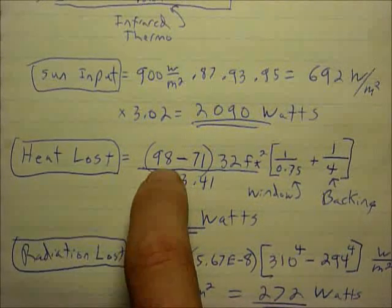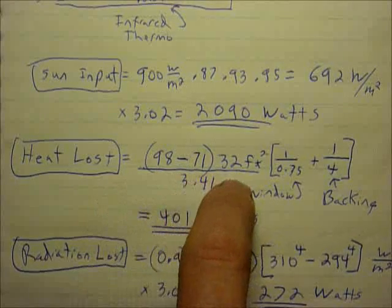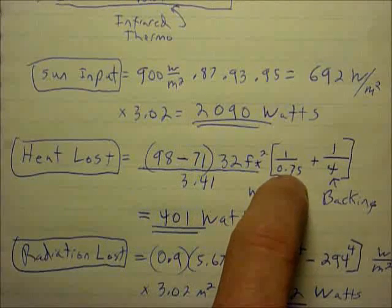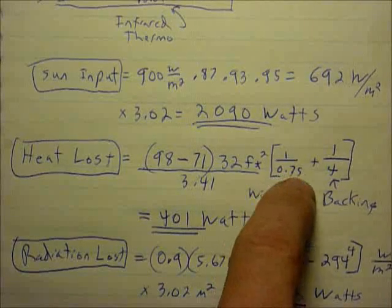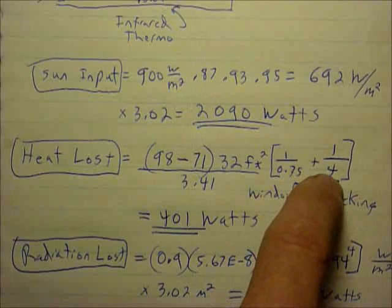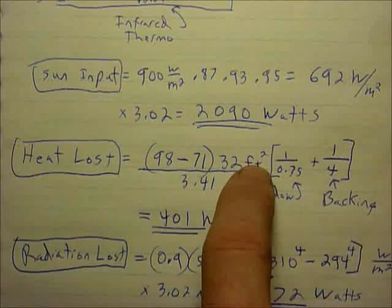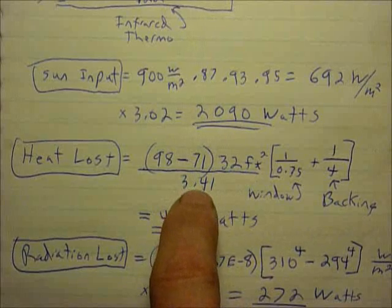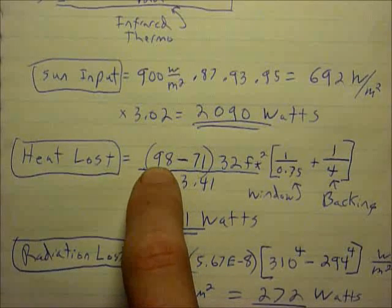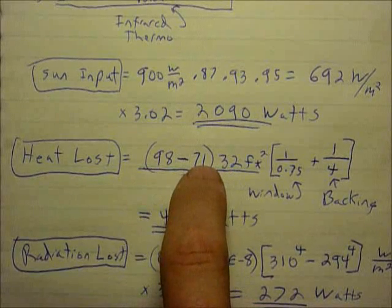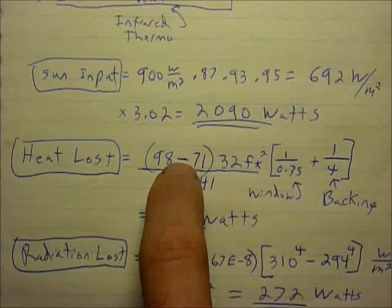The heat loss comes from a basic equation that uses the R factor. These numbers over here are the R factors. This is from the front surface the greenhouse plastic and this is in the backing where R equals 4. Once you do the unit conversions for Fahrenheit and feet squared you can divide by 3.41 as the conversion factor. The average temp inside the box was 98 and the ambient temp was 71, so that's the difference in temperature between ambient and the box.